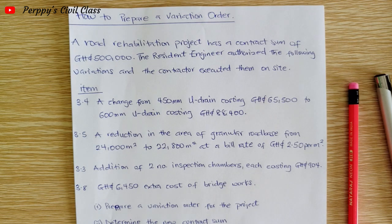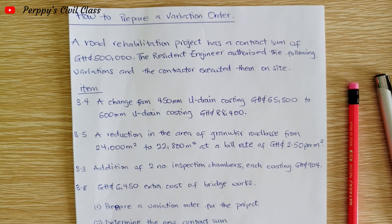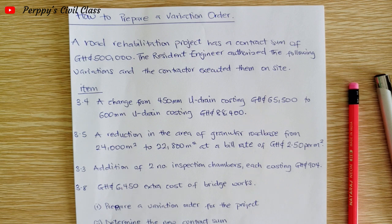Welcome to Peppy Civil Class. Today we will be looking at how to prepare a variation order. A variation is simply an adjustment in the cost of work arising from site changes, including the increase, decrease, omission, change in quality, change in position, change in dimension, or even demolition of any part of work under a contract. The engineer can order the contractor to construct it and there is a need to prepare a new variation order.